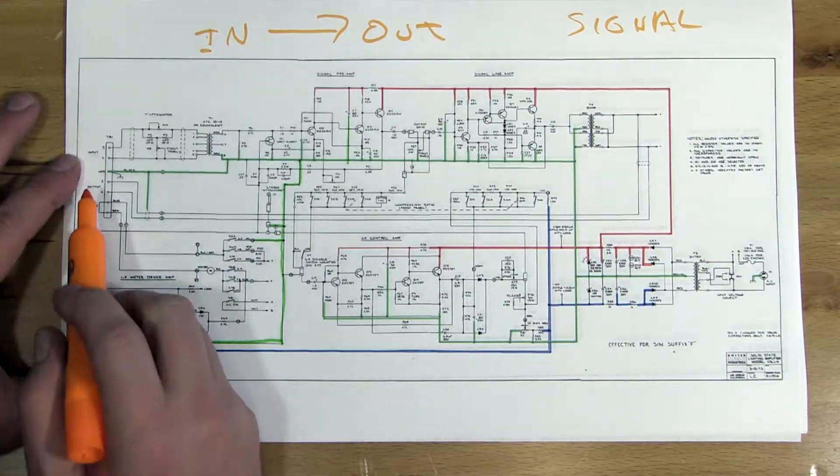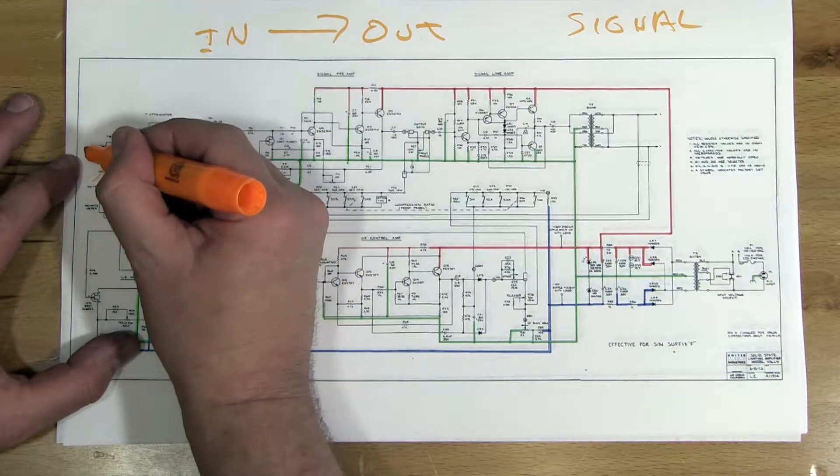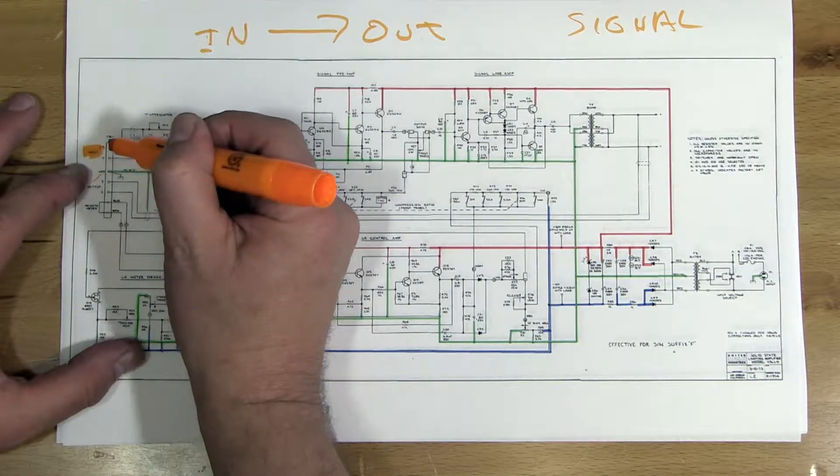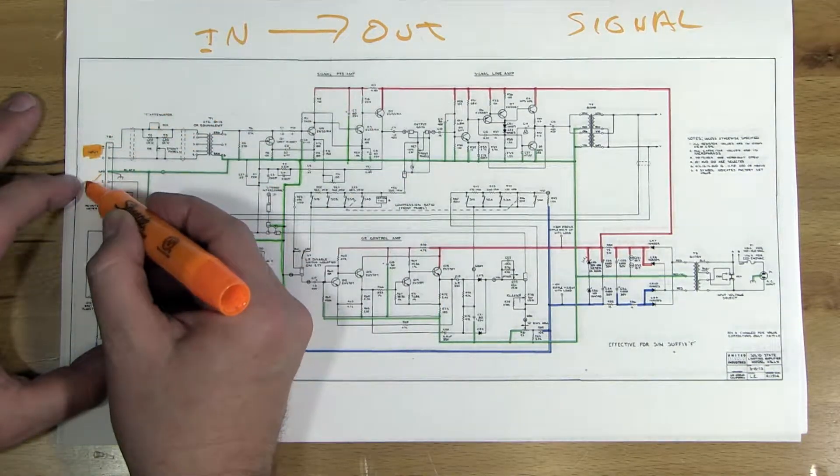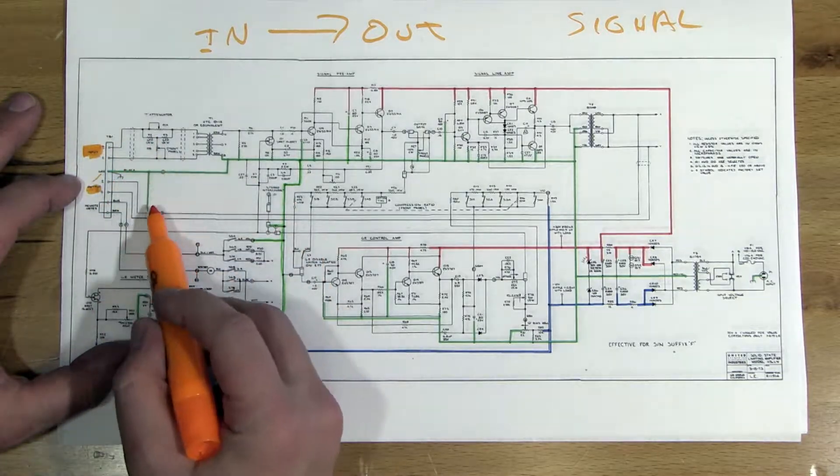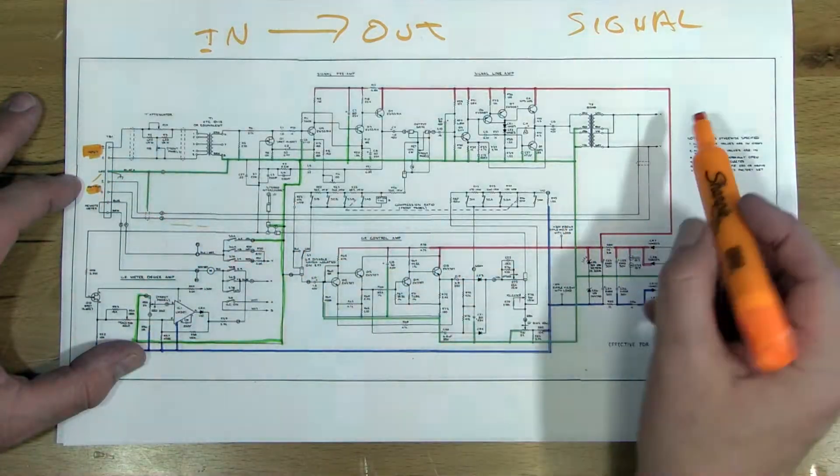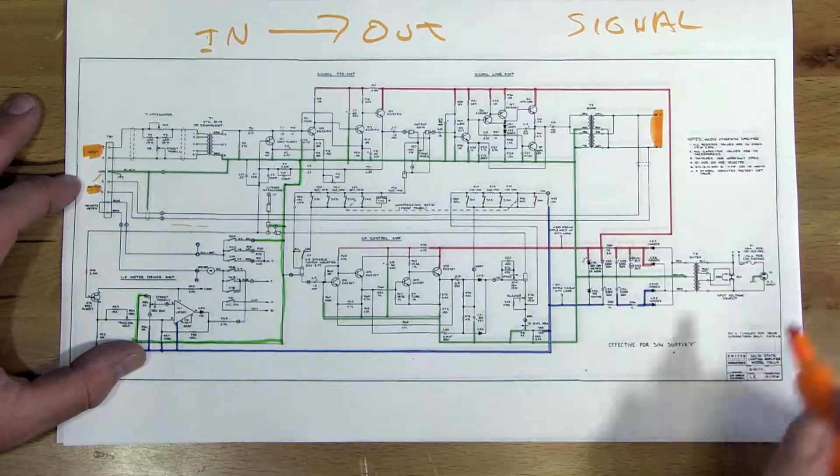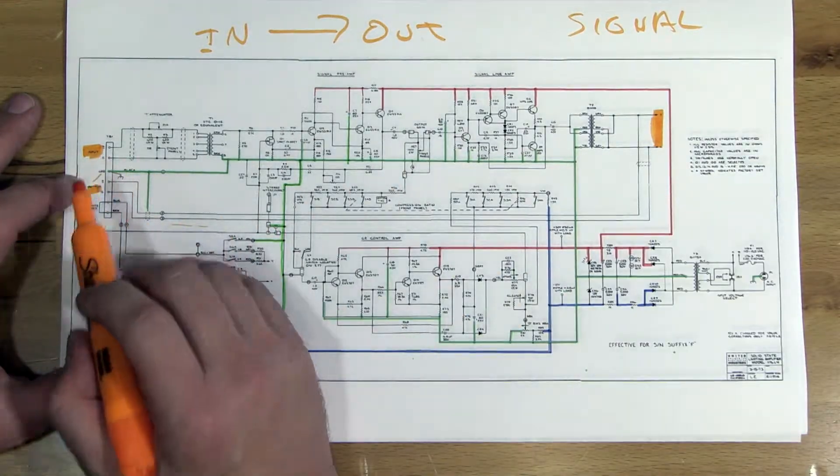So over here we have the input marked. And then output is also marked in the same place. See output goes all the way over to here. So here's my output. So that's where we're going to end. This is where we're going to start.